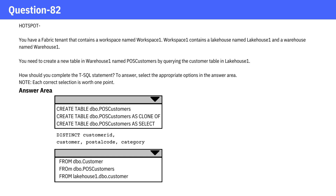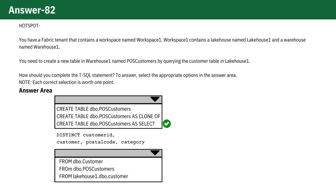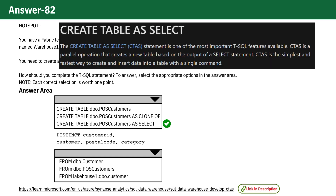The correct answer for the first drop-down is 'CREATE TABLE dbo.POS Customers AS SELECT'. This option is used to create a new table, dbo.POS Customers, based on the results of a select query. It is the appropriate choice when you want to create a table from the results of a query.